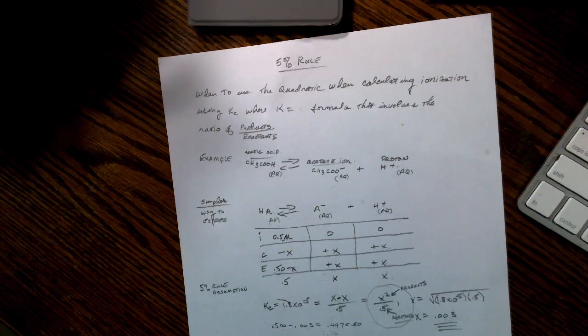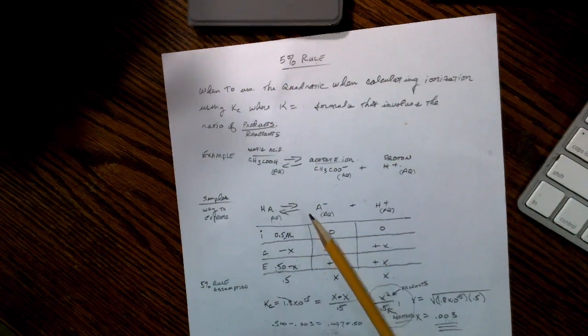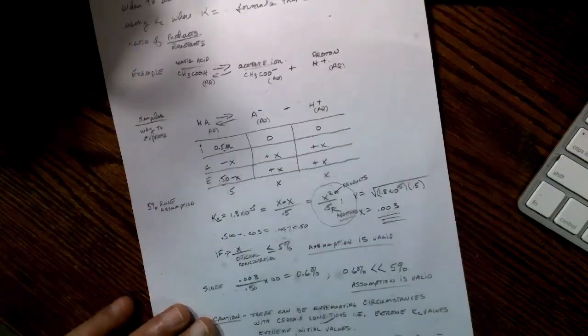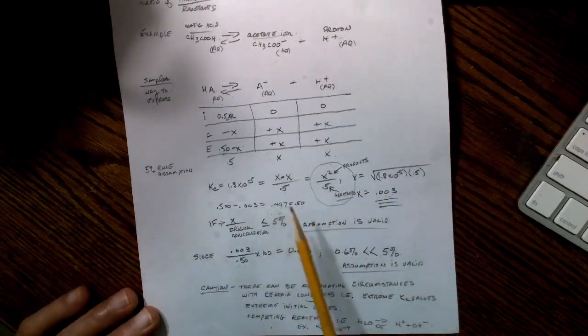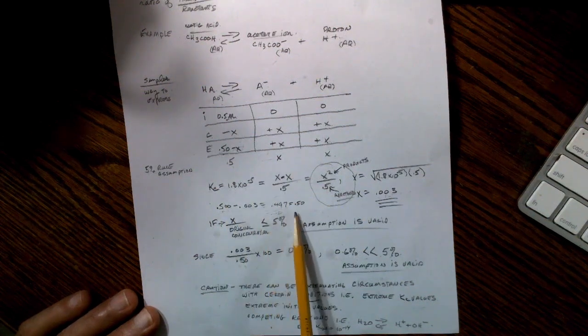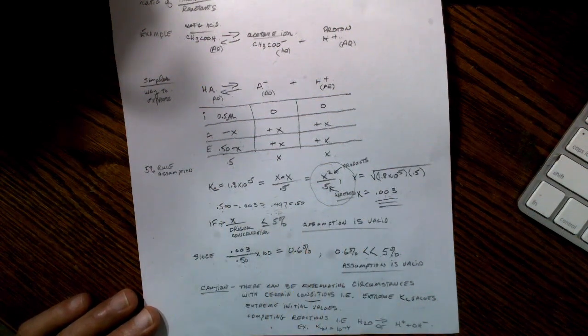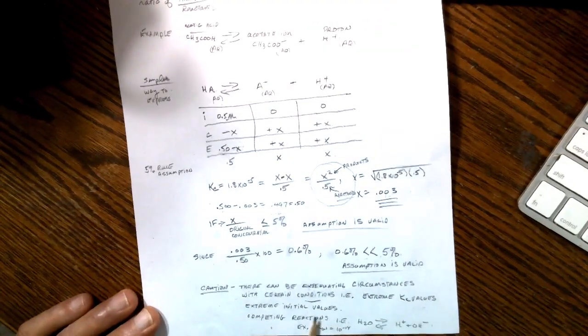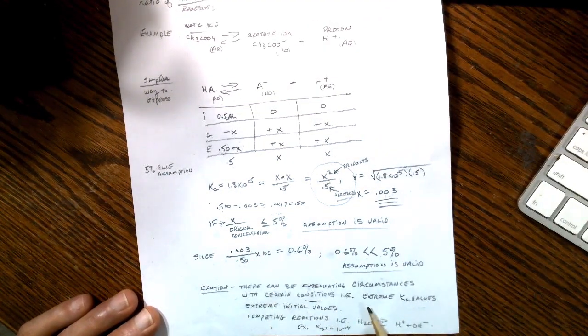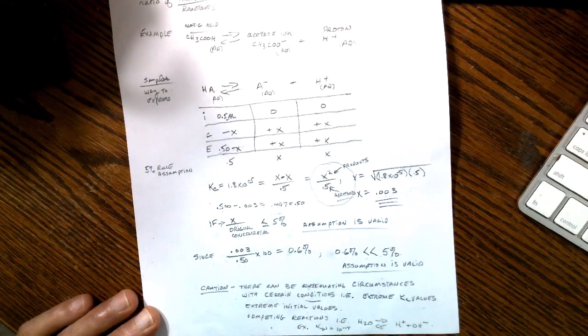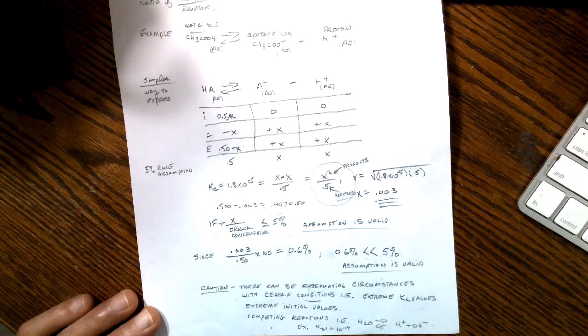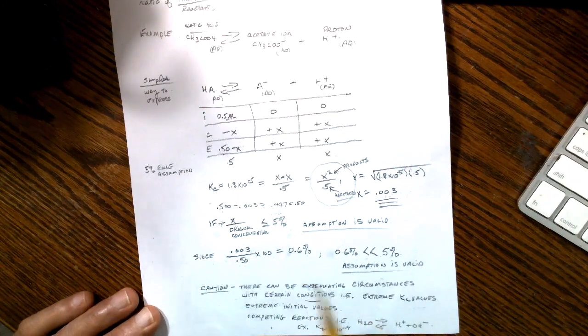Can something that complicated be on a test? It's unlikely. A good professor or teacher is going to need to get a whole classroom in and out in an hour's time, and he's not going to bog you down with a problem that's going to take an hour or two to solve and double check. It's probably going to be multiple choices, too. This was the 0.5 minus the 0.003, which is the 0.497, equal to 0.5.